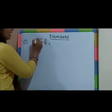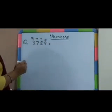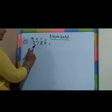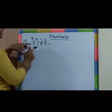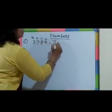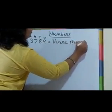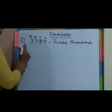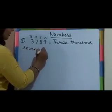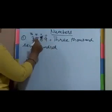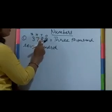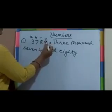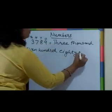So, 1, 10, 100, and 1000. Now we have to start the number from the 1000s place. So, here, on the 1000s place, it is 3. So, it will be 3000. On the 100s place, we are having 7. So, it will be 700. On the 10s place, we are having 8. So, it will be 80. And on the 1s place, we are having 9. So, it will be 9.